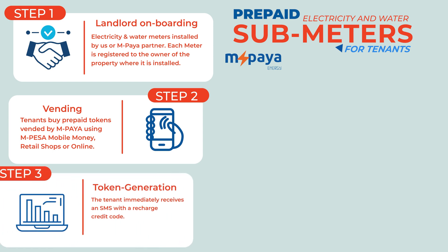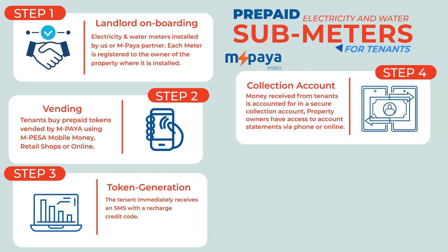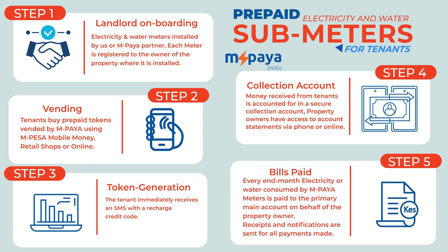Step 3: Token generation — the tenant immediately receives an SMS with a recharge credit code. Step 4: Collection account — money received from tenants is accounted for in a secure collection account, and property owners have access to account statements via phone or online. Step 5: Bills paid — every end of month, electricity or water consumed by Empire meters is paid to the primary main account on behalf of the property owner, and receipts and notifications are sent for all payments made.